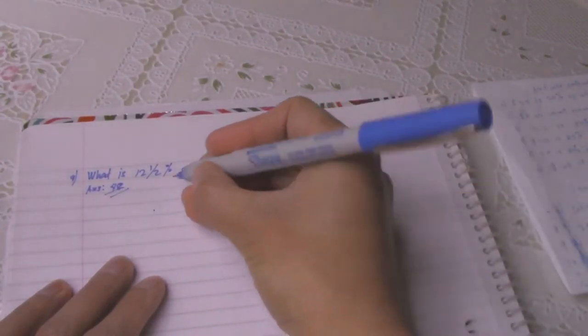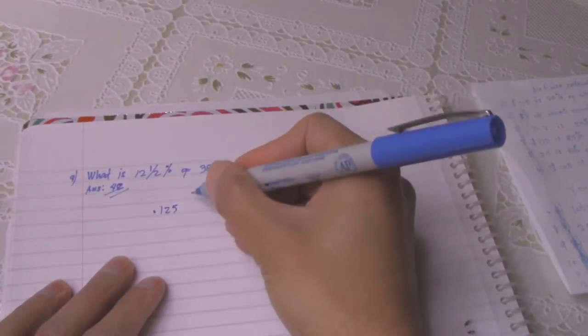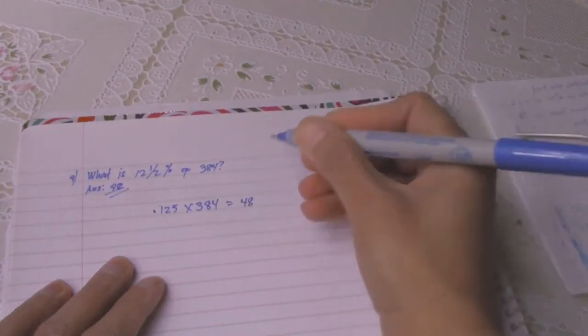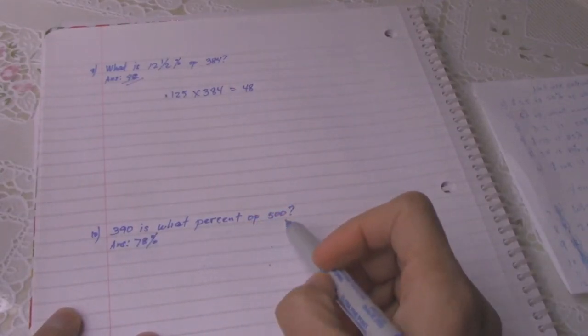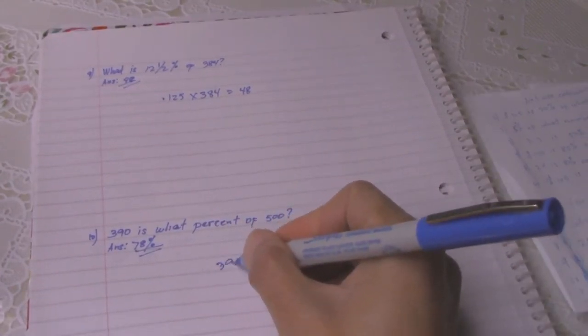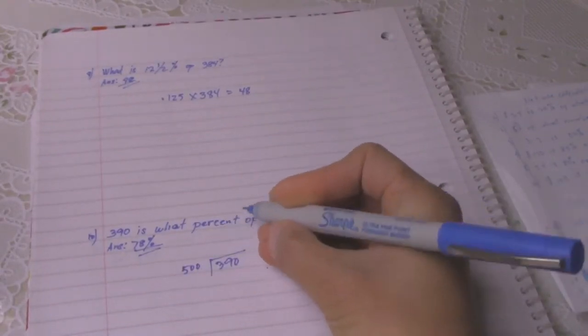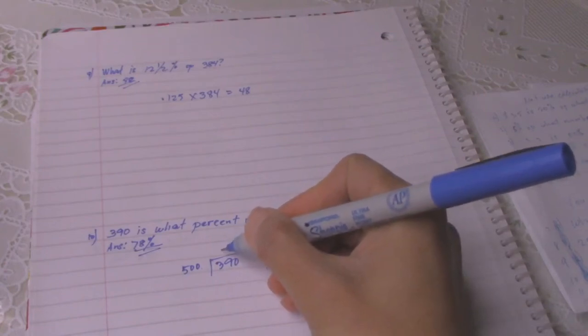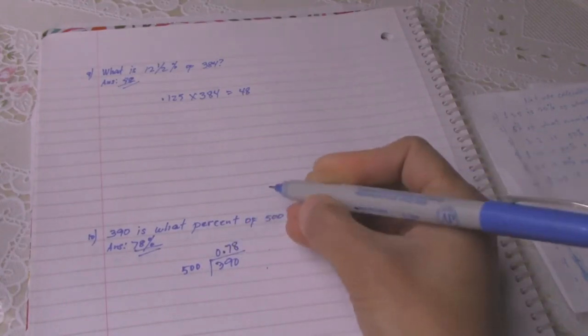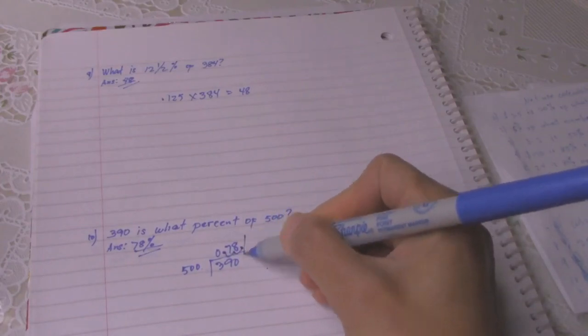Number 9: 390 is what percent of 500? The answer is 78 percent. 390 divided by 500 is 0.78, and translated to percent, count one, two here, so it becomes 78 percent.